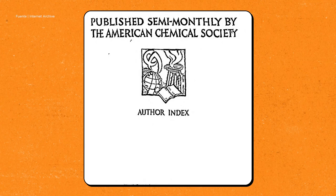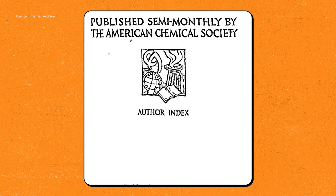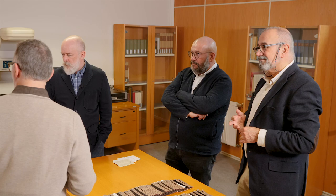El Chemical Abstracts empezó a publicarse en 1907, ya con el propósito de ser un repertorio exhaustivo de toda la documentación química que se publicaba en el mundo. En ese año recogía unos 12.000 resúmenes, sobre todo artículos de revista, no exclusivamente, pero unos 12.000.